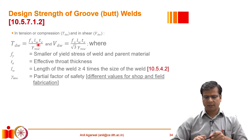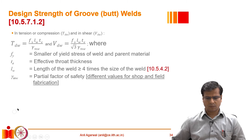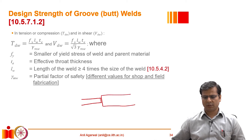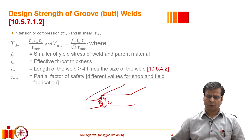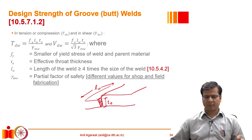LW basically represents the length of the weld. If we wish to join two plates using a groove weld, the throat thickness Te is used in that direction. In the direction perpendicular to the plane, we take LW, the length of the weld. If it is a single continuous weld we take the entire length; if it is an intermittent weld we take the length appropriately. Te multiplied by LW gives us the total cross-section subjected to tension.